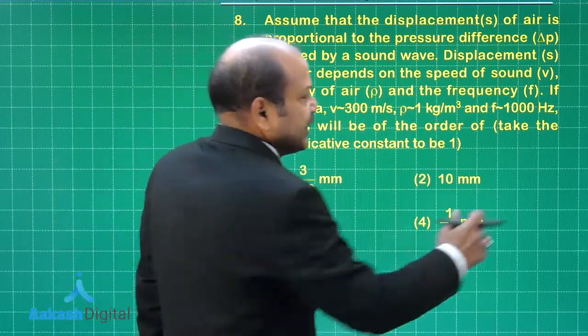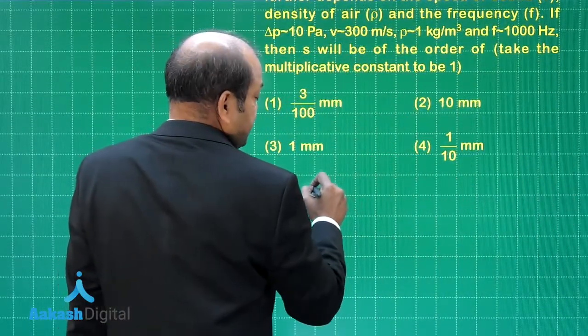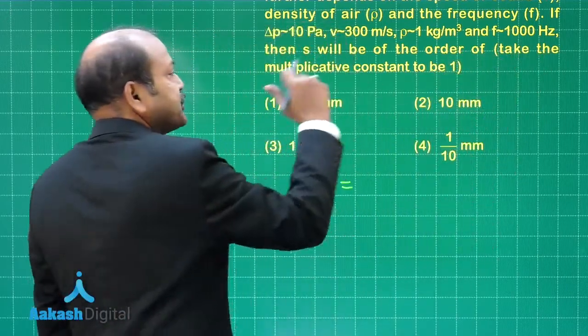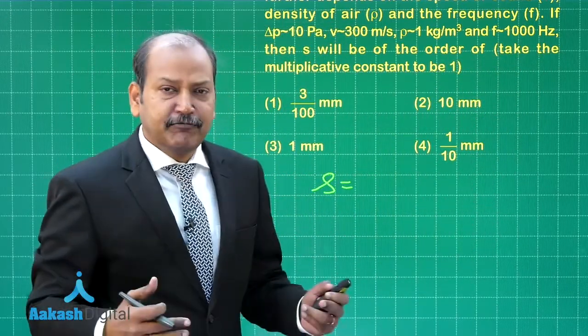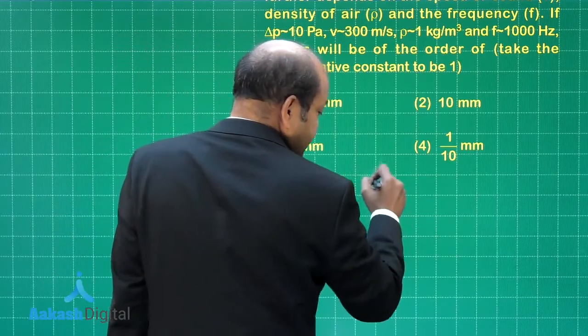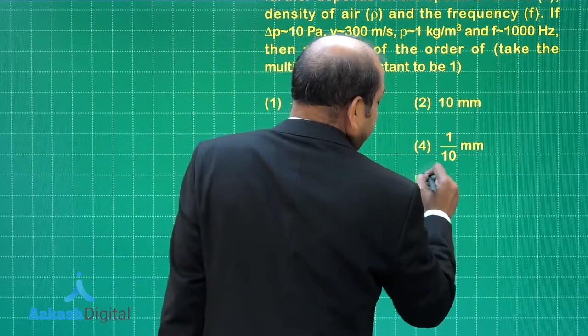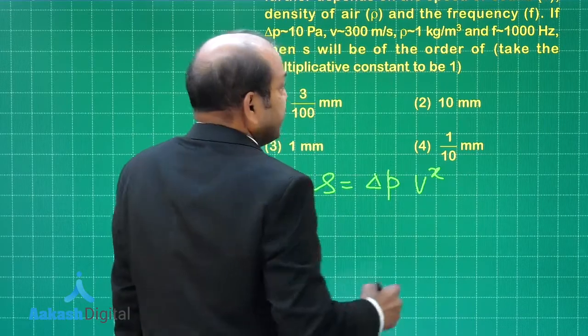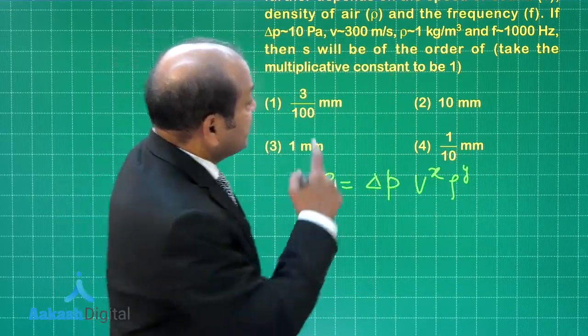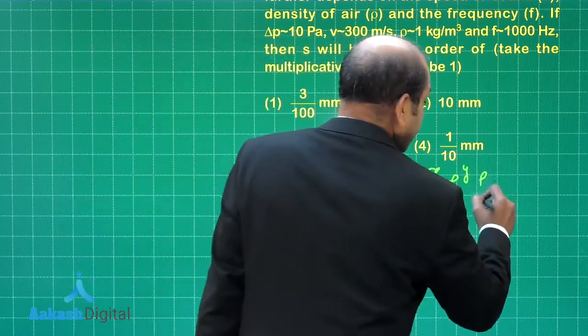Let us assume that the relation is something like this: s the displacement of air, and it clearly says that we have to take the multiplicative constant as 1. So that means s can be taken as 1 into Δp, and let us say that the power of v is x, then power of ρ is y and finally there is one more parameter and that is frequency, power of frequency is z.